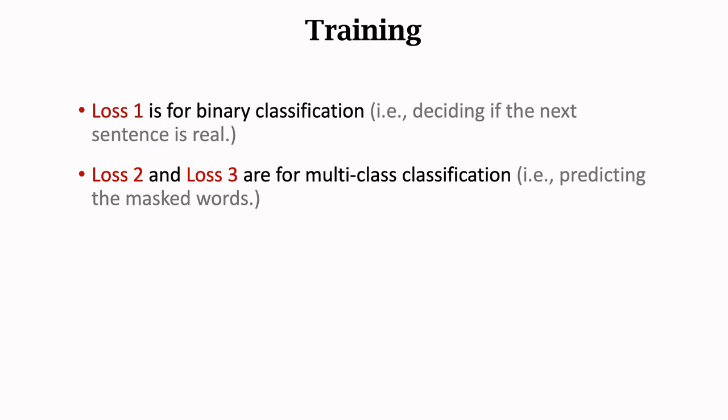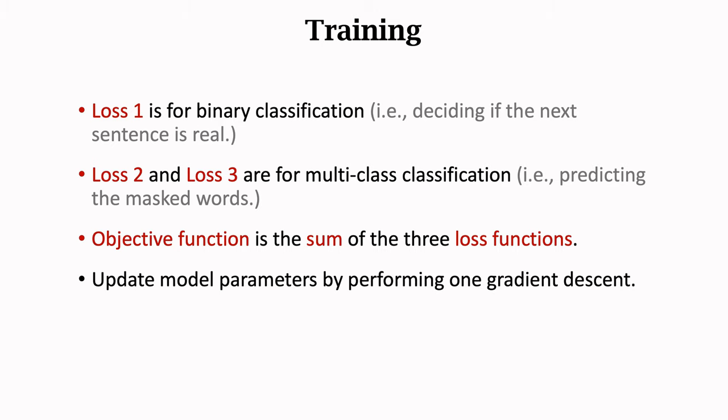Suppose two words are masked. Then we have three tasks. One task is binary classification, and the other two tasks are predicting the two masked words. We need three loss functions. The first is for binary classification, which is to decide whether the second sentence is the real next sentence. The second and the third loss functions are for multi-class classification, that is to predict the two masked words. Each loss function corresponds to a word. The objective function is the sum of the three loss functions. We compute the gradient of the objective function with respect to the model parameters using backpropagation. The model parameters are then updated by performing a gradient descent.